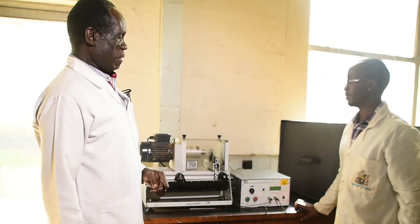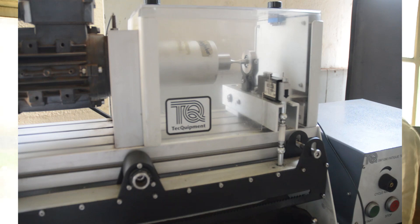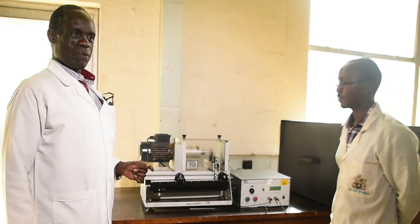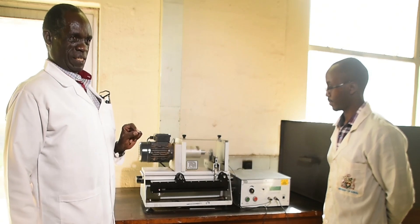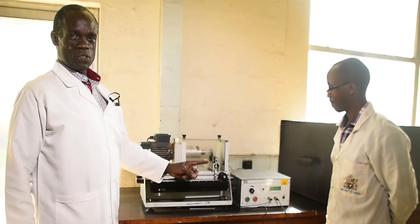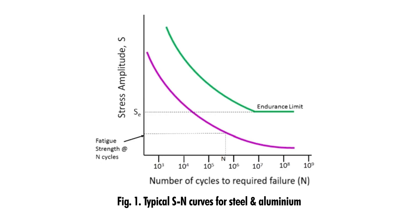When the specimen fails, we record the stress that we have used against the number of cycles it takes to fail. When one specimen is done, we repeat the same experiment with a different specimen but with a lower stress. We continue doing this until we reach a level at which the specimen does not fail. At the end, we plot a graph showing the stress against the number of cycles to failure — this is called the SN curve.